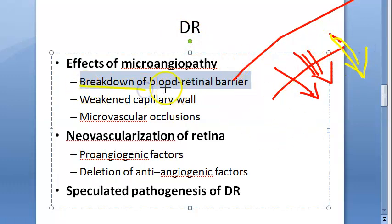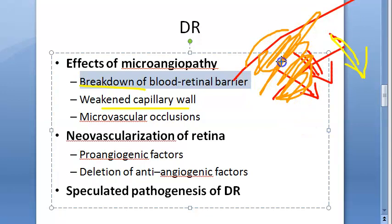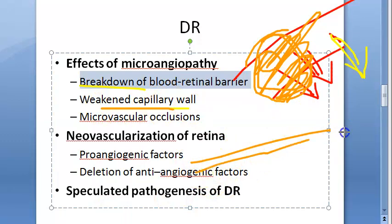Weakened capillary wall produces aneurysms. If the capillary wall is weak it will form a microaneurysm - like a balloon. This is something observed in fundus examination: microaneurysm. Hemorrhage can also happen because of this weakened capillary wall. An aneurysm is a ballooning of the wall of the blood vessel; it is a very weak structure that can rupture and lead to hemorrhage.